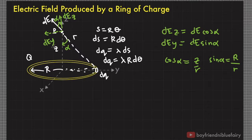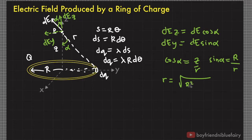This r is equal to, using the Pythagorean theorem, the square root of R squared plus z squared.